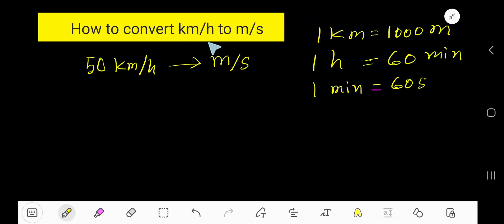How to convert kilometer per hour to meter per second. Okay, so specifically we'll convert 50 kilometer per hour to meter per second. Okay, write the problem here: 50 kilometer per hour.